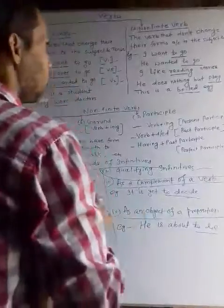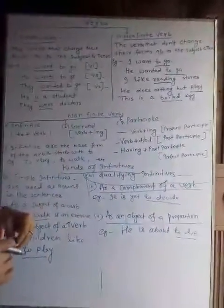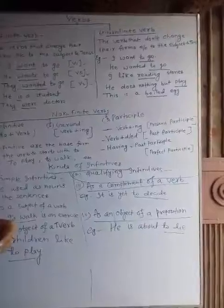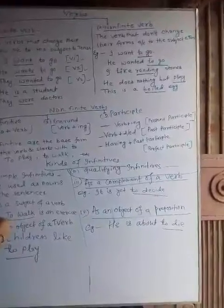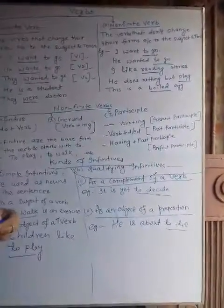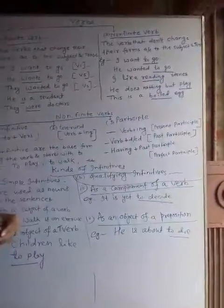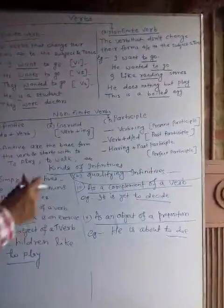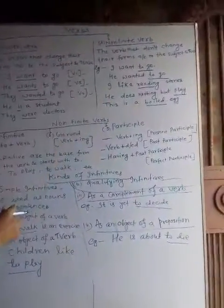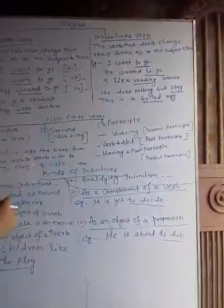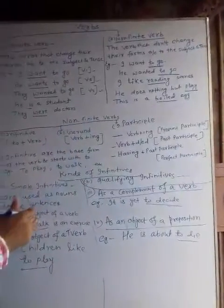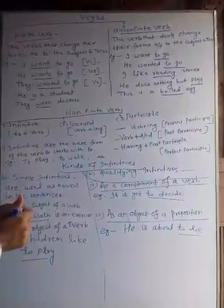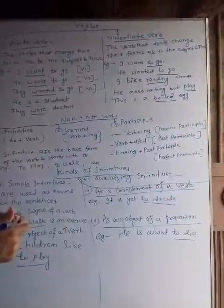Now let's see what is a non-finite verb. The verbs that do not change their form according to the tense and the subject in the sentence. For example: I want to go. He wanted to go. I like reading a story. He does nothing but play.